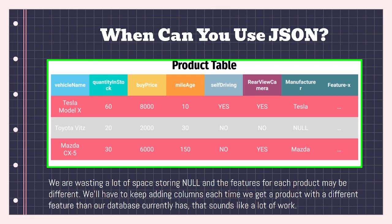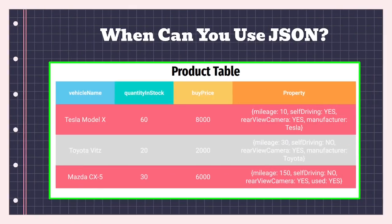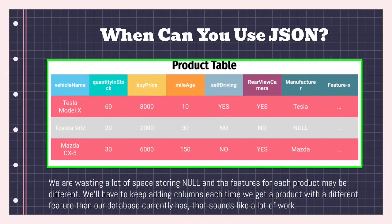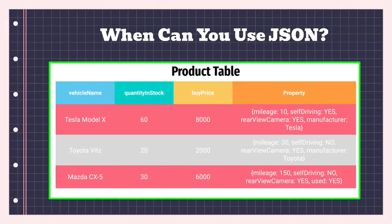We can't fit all possible features for all cars as columns — that database would have a ridiculously huge number of columns. We don't want that design. Every three days they discover a new feature and you have to go add it. The simple answer to this problem is simply using a JSON data type. Instead of adding new columns every time a new feature comes up, you just add one single column called 'property' and set its data type to JSON.